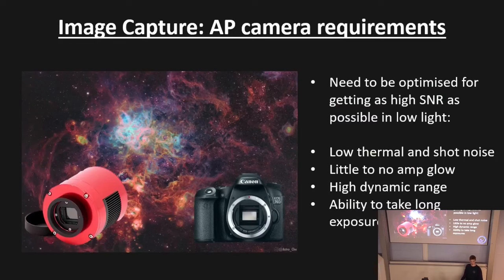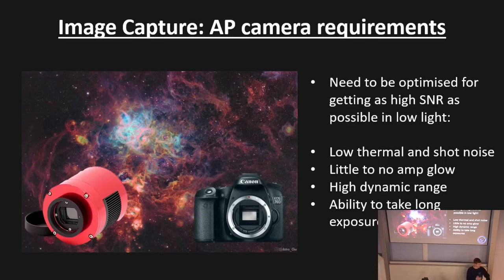Once we have tracking and guiding sorted, we need to photograph the objects. Astrophotography is particularly difficult because what we're imaging is very, very faint, so we have demanding requirements for cameras. We need a high signal-to-noise ratio in low light: low thermal and shot noise, low amp glow, a high dynamic range so we can store as much information as possible per pixel, and the ability to take long exposures — well beyond the 30-second maximum of older cameras, into the five to ten minute range.